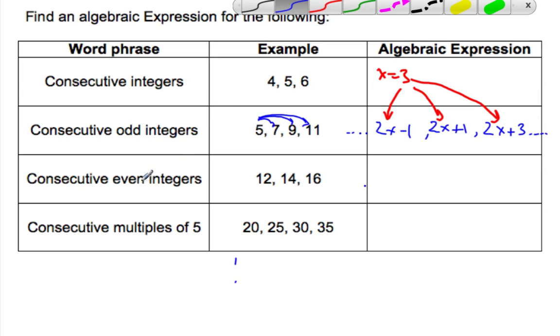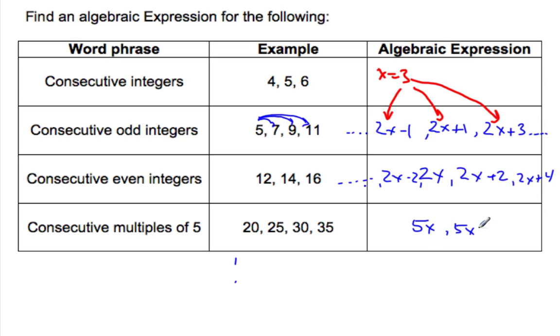Consecutive even integers - it's almost the same, except this time it's 2X. That's insured even. And then the next one, I add 2 to it. We didn't have to take away the 1 to make it odd. 2X is going to be even, and then 2 bigger or 2 smaller is also going to be even. If it's multiples of 5, that's going to be 5X, and the next one would be 5X add 5, then 5X add 10. Let's try an example with this idea.